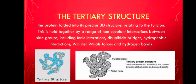Now let's move on to the tertiary structure. In the tertiary structure, the protein is folded into a precise 3D structure relating to its function. This is held together by a range of non-covalent interactions between side groups, including ionic interactions, disulfide bridges, hydrophobic interactions, Van der Waals forces, and hydrogen bonds. The pleated sheet and alpha helix form the tertiary protein structure, and it occurs when certain attractions are present between alpha helices and pleated sheets. The tertiary structure refers to the folding of different segments of helices, sheets, turns, and the remainder of the protein into the native three-dimensional structure.